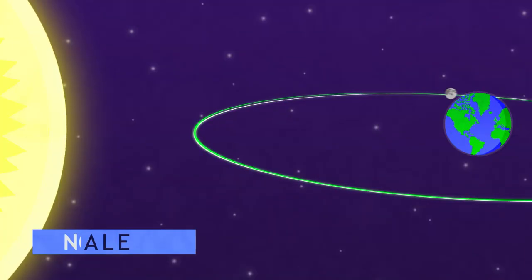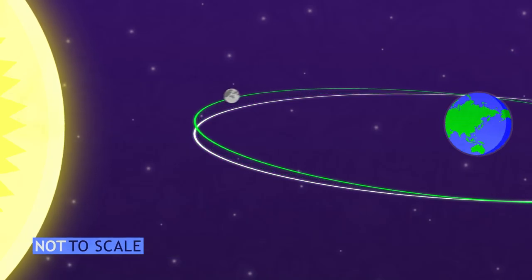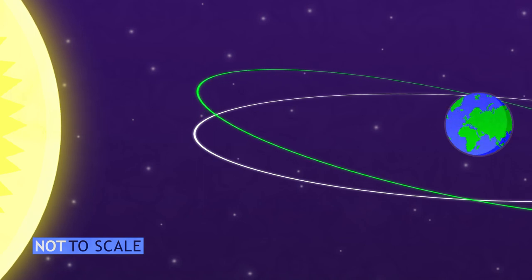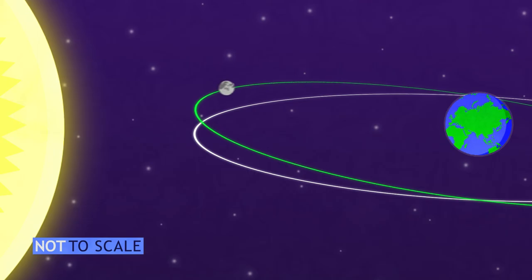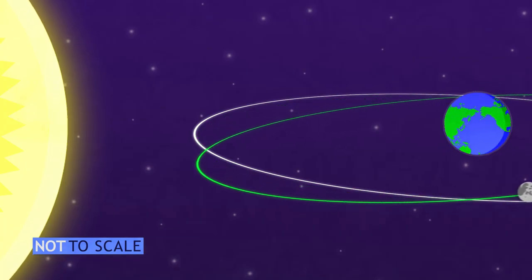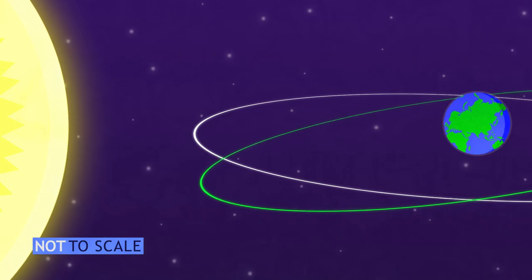We don't see solar and lunar eclipses every month. As the moon goes around the Earth, its orbit is slightly tilted with respect to the sun. That means that most of the time, when the moon passes in front or behind the Earth, it's a little too high or low to be perfectly aligned with the sun.